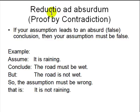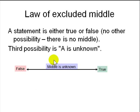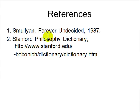Reductio ad absurdum is very commonly used in mathematics. Another important principle in logic is the law of excluded middle: in propositional logic, a statement is either true or false — there is no third possibility, no middle ground. We will always assign a proposition to be either false or true. For reference, if you are interested in simple logic puzzles, you can look up Raymond Smullyan's book 'Forever Undecided' from 1987, and there is also a lot of material in the Stanford Philosophy Encyclopedia online.